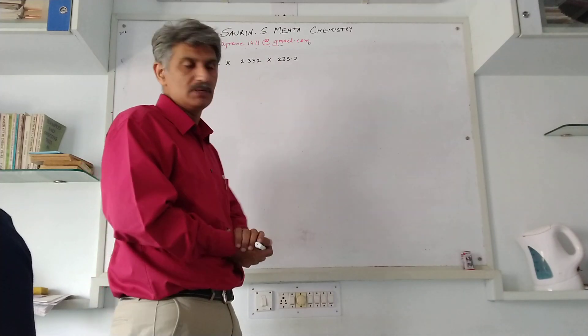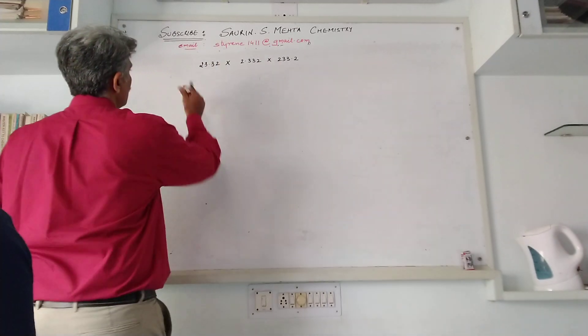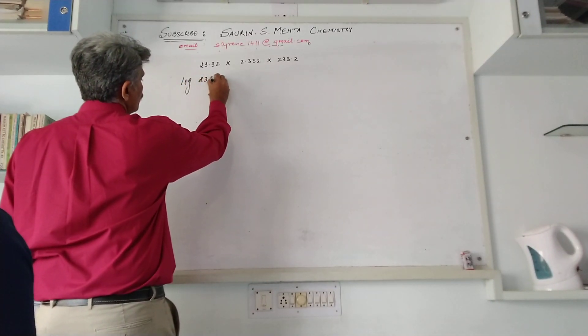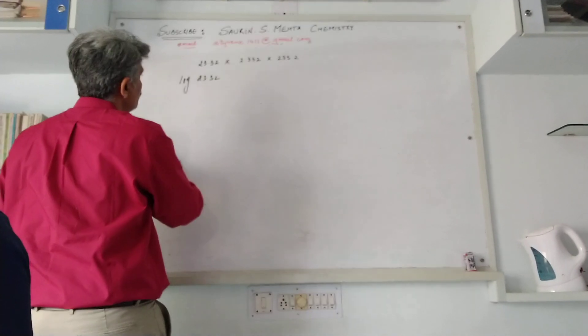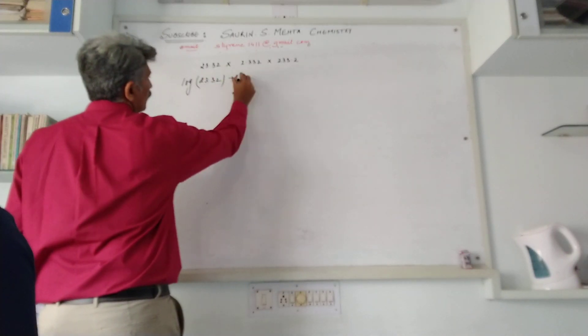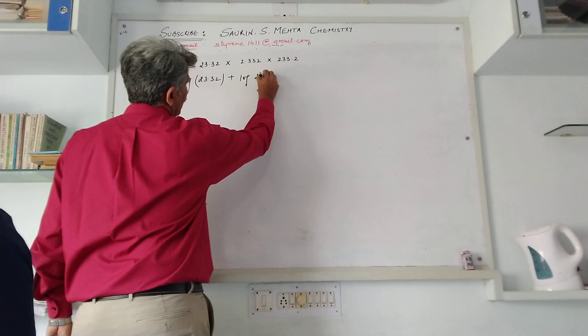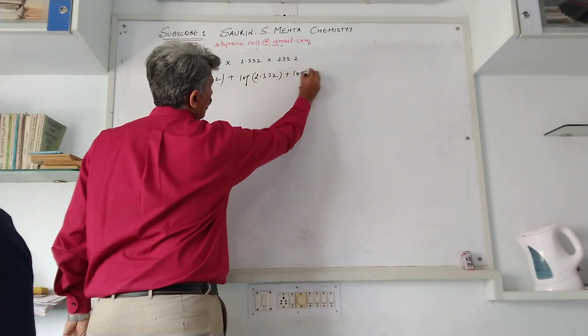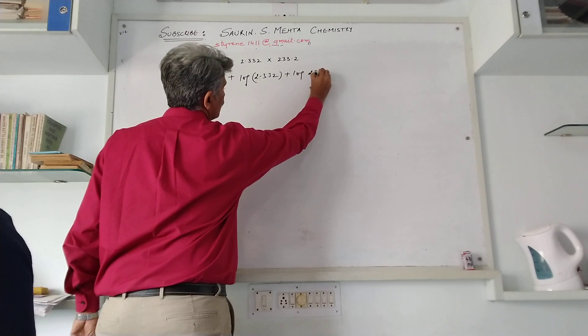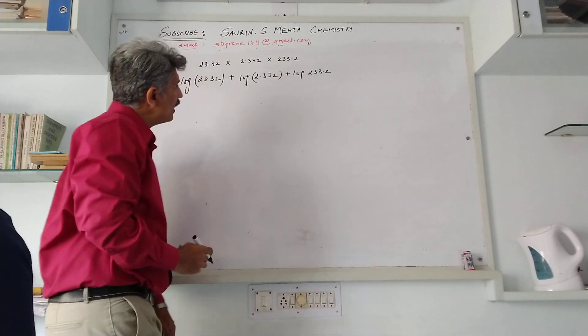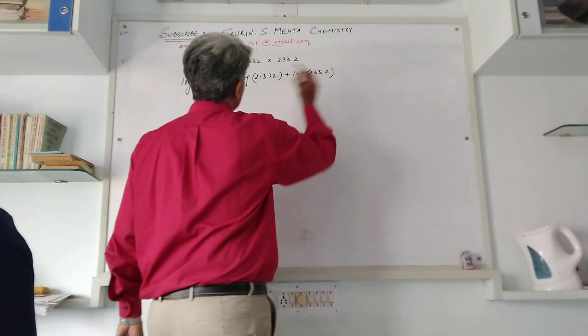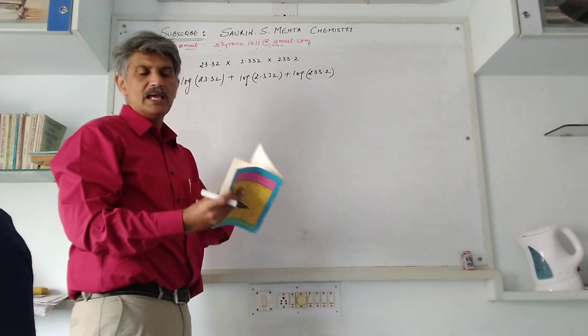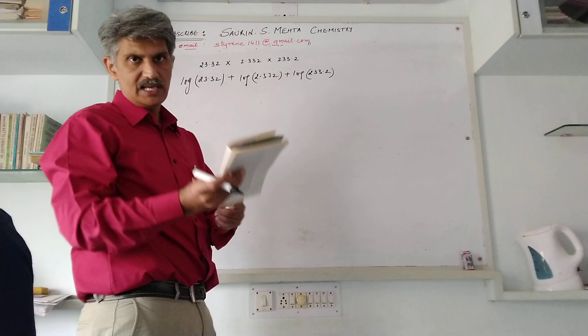First of all I'll write log of 23.32 plus log of 2.332 plus log of 233.2. I am considering log for all three values. I have got a log table here. First of all I will take out the log table. Simultaneously you can also practice getting log from the log table.